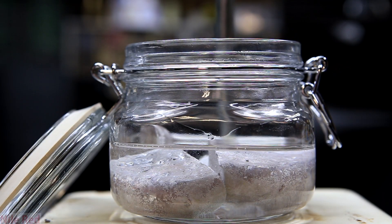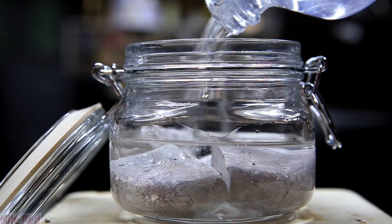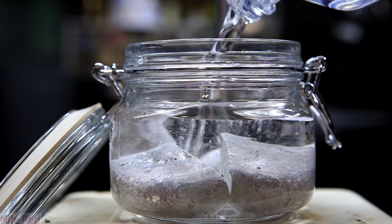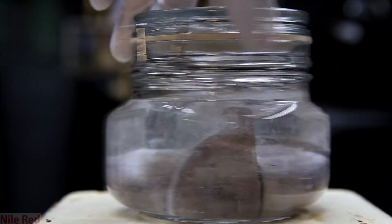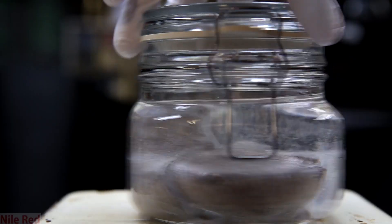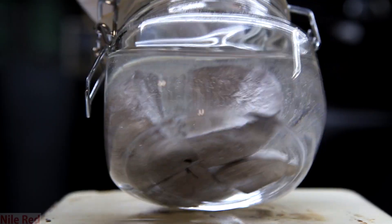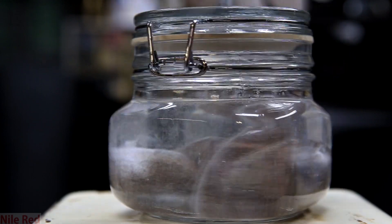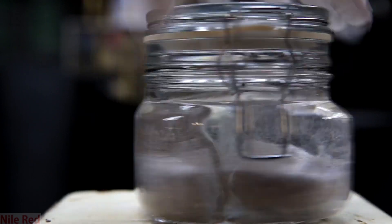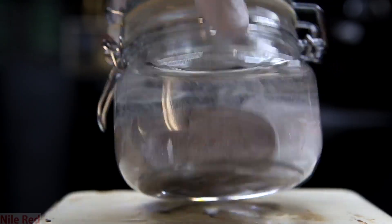You'll notice bubbles coming off of the sodium, and this is because sodium is reacting with some of the moisture in the mineral oil. This is fine, but the pressure that's produced by these bubbles is going to need to be vented off every so often for the first few weeks of storage. If you don't want this to happen, you can simply pre-dry mineral oil using sodium before adding your fresh sodium into it.